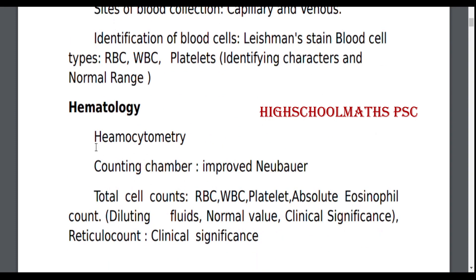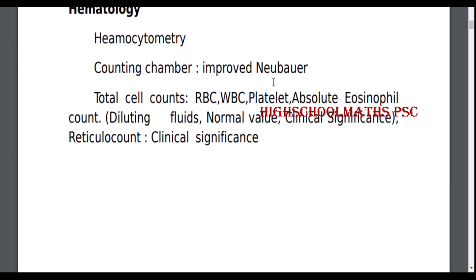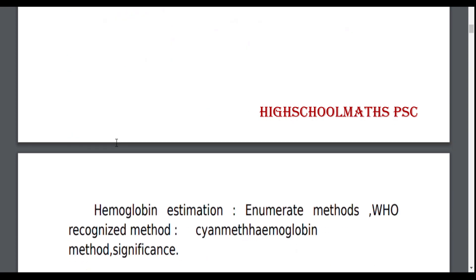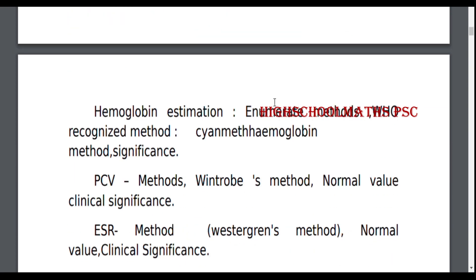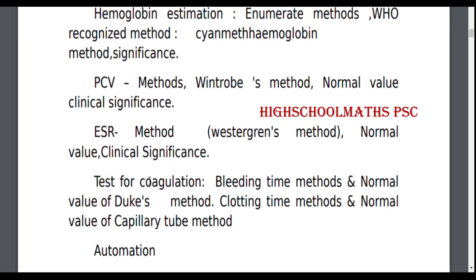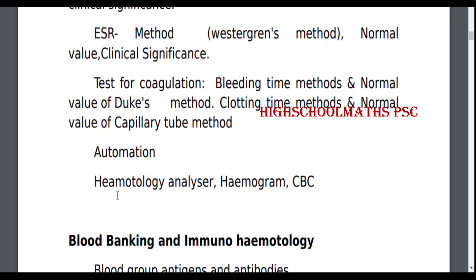Hematology and Hemocytometry: Counting Chamber (Improved Neubauer), Total Cell Counts — RBC, WBC, Platelet, Absolute Eosinophil Count. Hemoglobin Estimation, PCV Methods, Wintrobe's Method, Normal Value and Clinical Significance, ESR, Test of Coagulation, Automation, Hematology Analyzer, Hemogram, CBC.